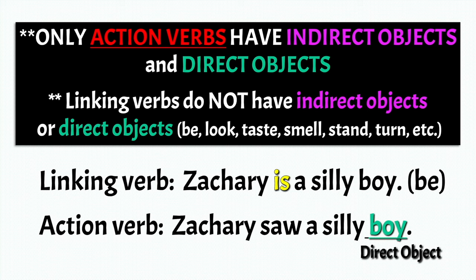One example of a linking verb would be: Zachary is a silly boy. Here, the verb to be is a linking verb — it's always a linking verb. With an action verb, we can say Zachary saw a silly boy. So the direct object here is boy — he saw who? A silly boy. Direct object.